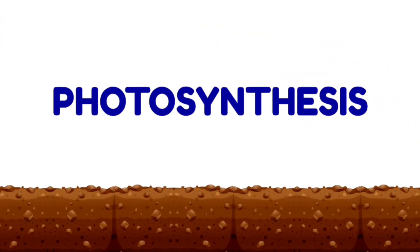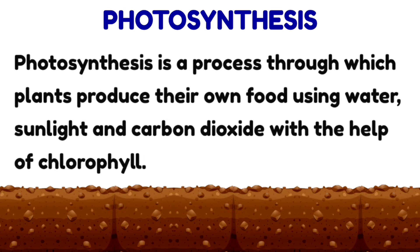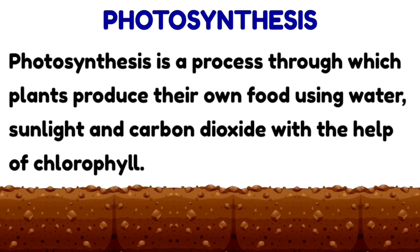Photosynthesis is a process through which plants produce their own food using water, sunlight, and carbon dioxide, with the help of chlorophyll.